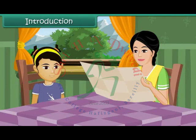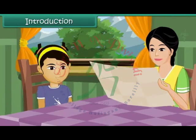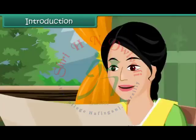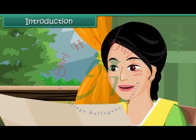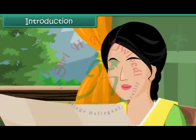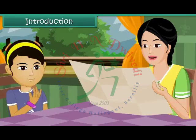Priya's mother is looking at the map of Sikkim. Priya wants to know why. Her mother tells her that she is planning a family visit to Sikkim next week. She wants the trip to be a memorable one for everyone. Therefore, she is planning.